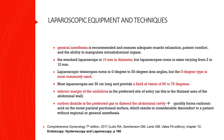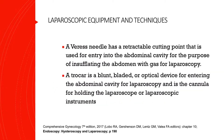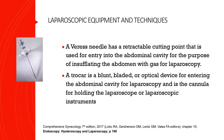Most laparoscopes are 30 centimeters long and provide a field of vision of 60 to 75 degrees. The inferior margin of the umbilicus is the preferred site of entry because this has the thinnest area of the abdominal wall. Carbon dioxide is the preferred gas to distend the abdominal cavity because it is not flammable, unlike oxygen. However, it quickly forms carbonic acid on the moist parietal peritoneal surface, which can result in considerable discomfort without regional or general anesthesia. A Veress needle, which has a retractable cutting point, is used for entry into the abdominal cavity to insufflate the abdomen with gas.